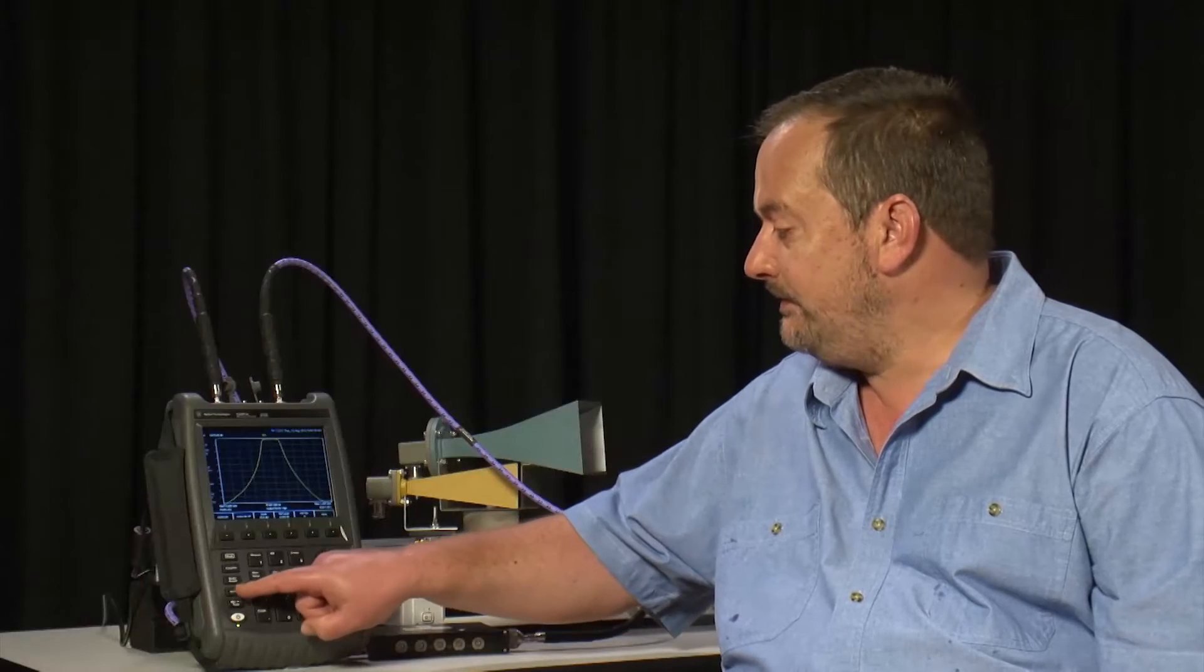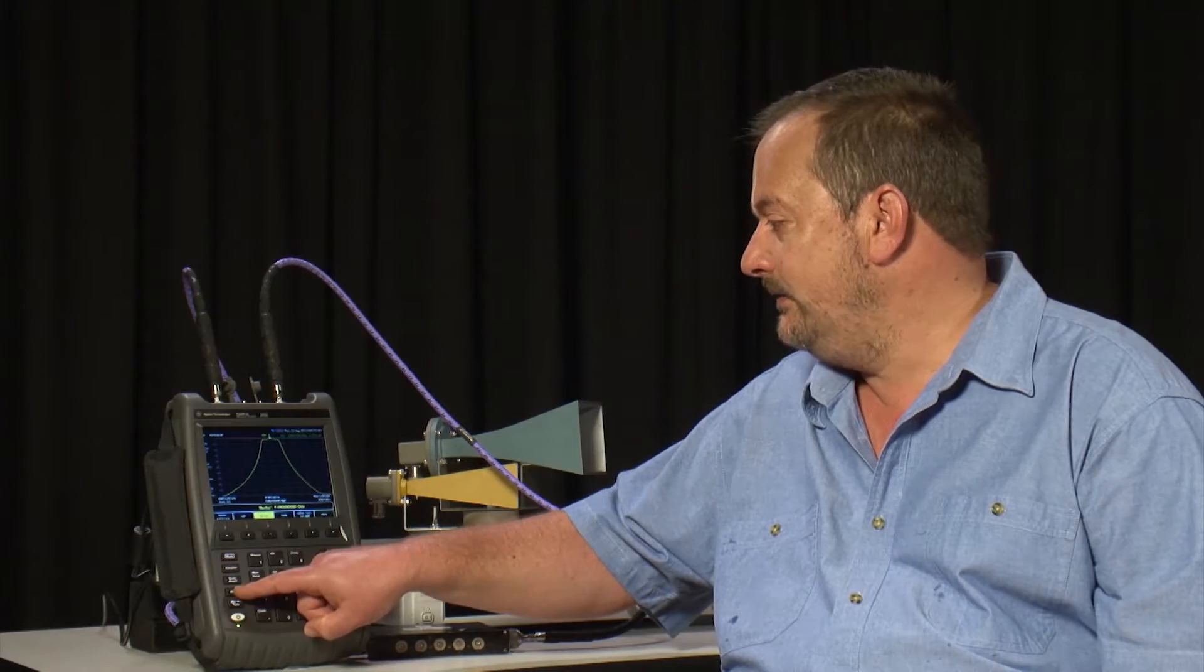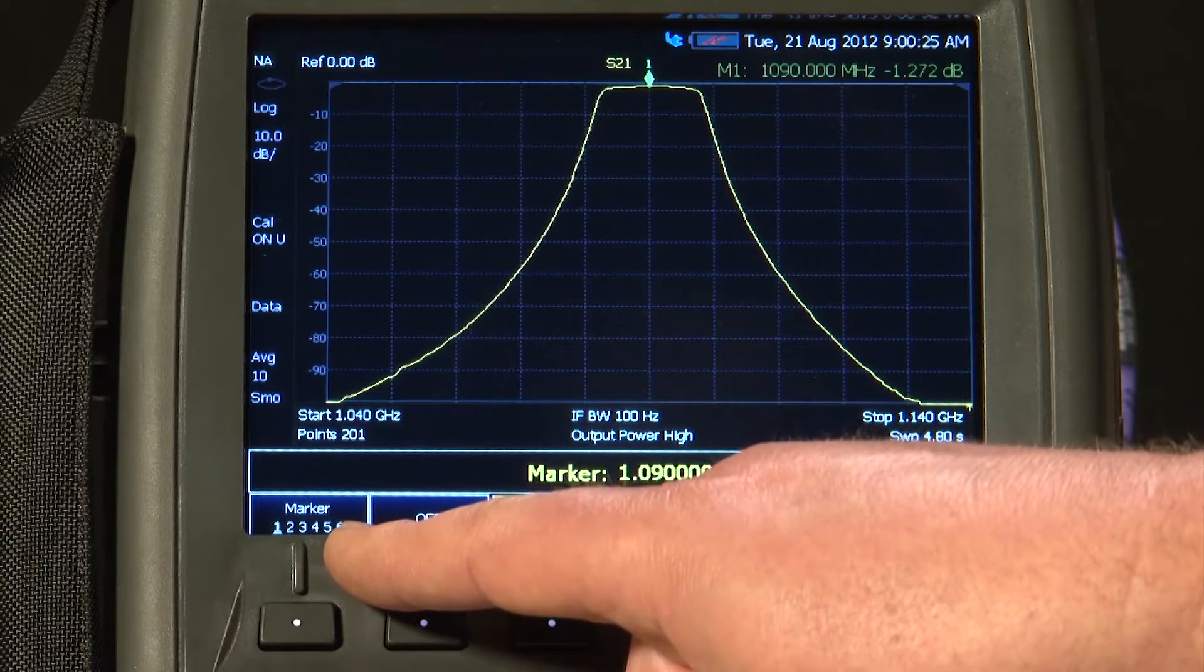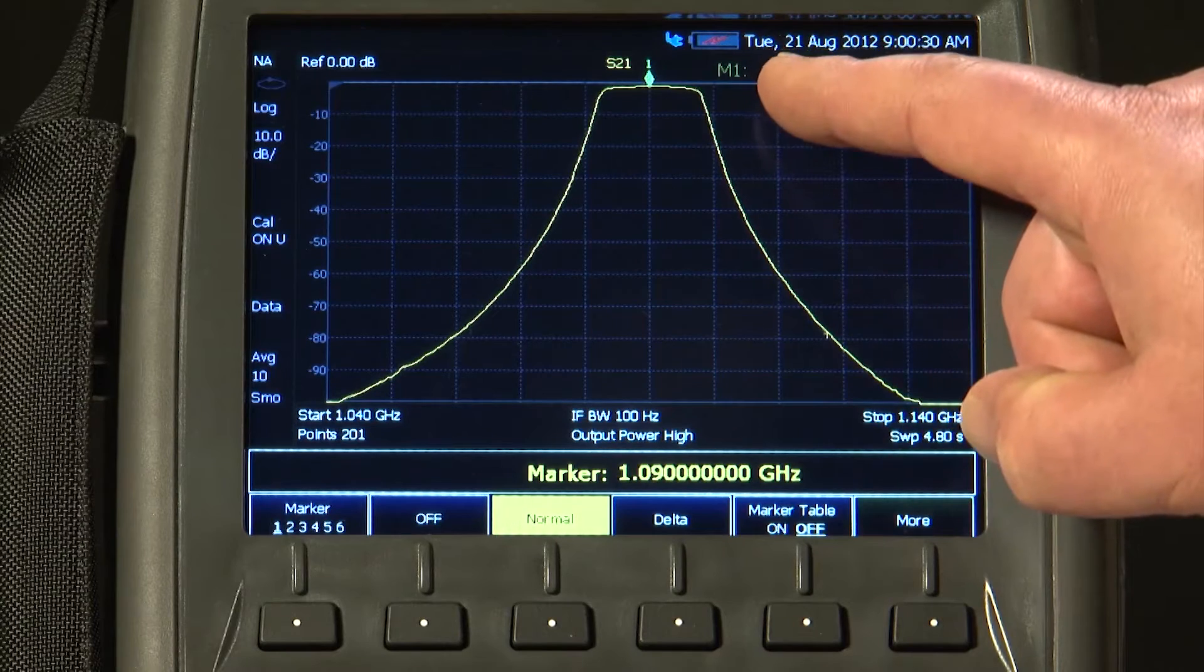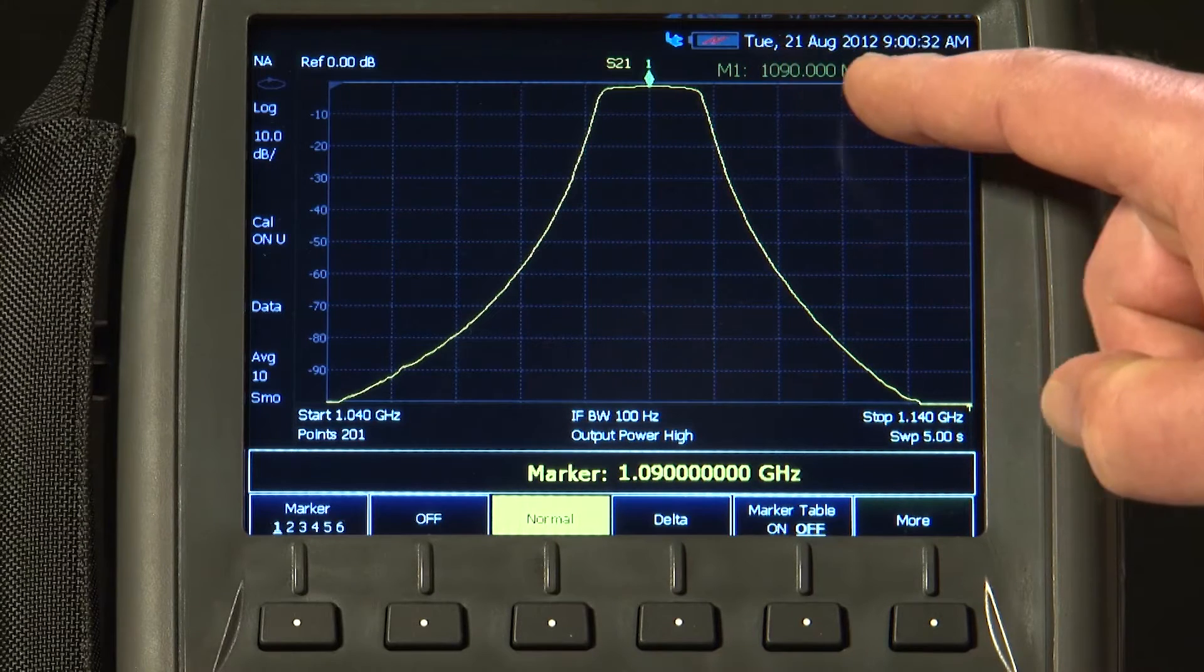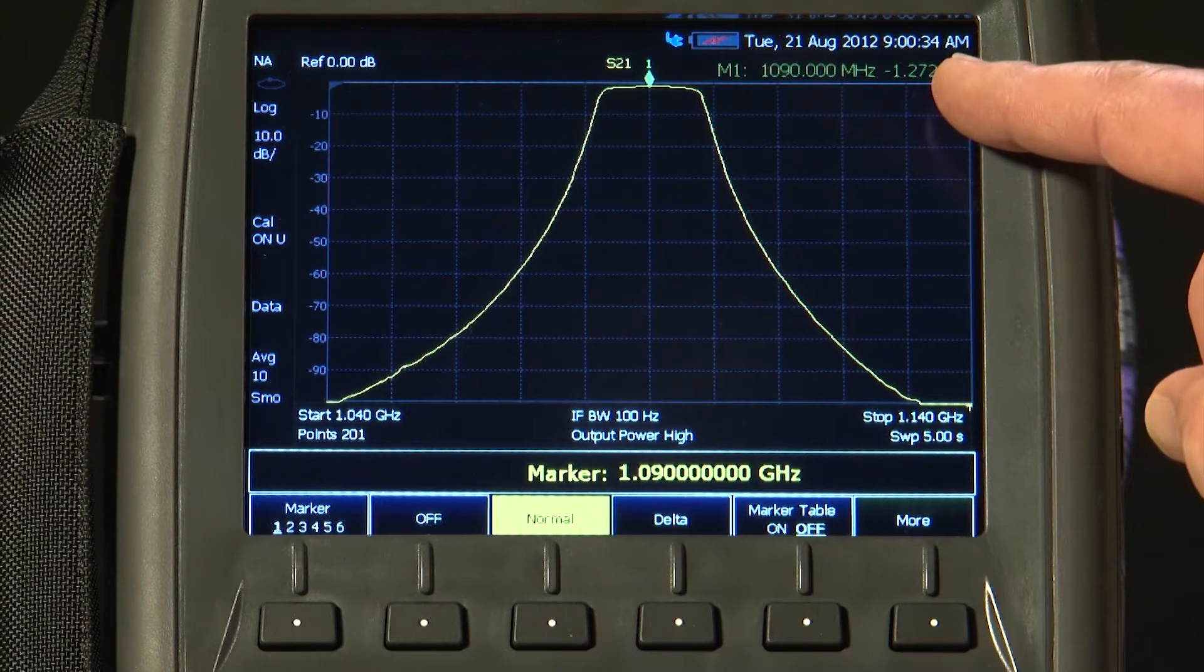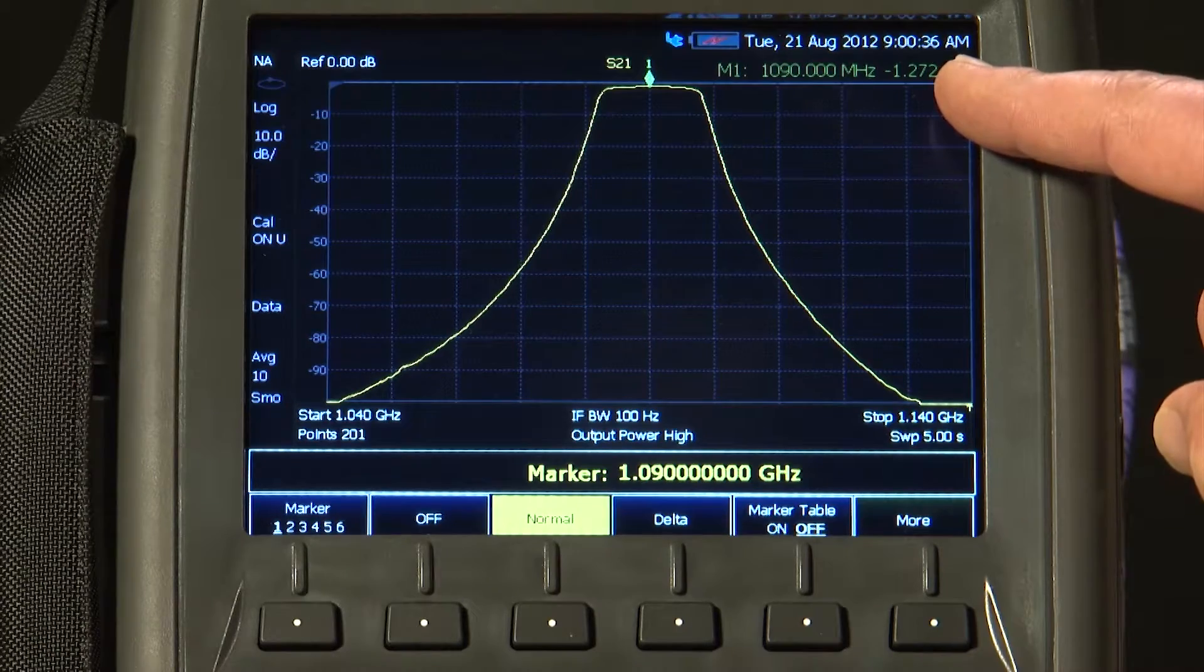I can, of course, press the Marker button. And as you would expect, we have got six markers available. I have just got a normal marker on the screen at the moment, Marker 1, which you can see is at 1090 MHz and an insertion loss of 1.272 dB.